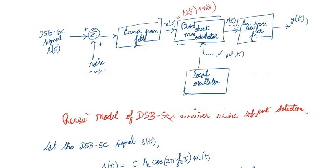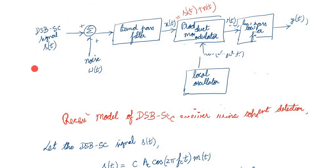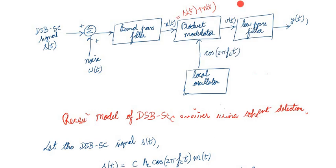In the demodulator we have a modulated input — specifically a double sideband suppressed carrier signal, represented as s(t). It is added with the noise signal, which is white Gaussian noise omega(t). We are going to study the impact of this noise in the receiver. This entire block is called the receiver model. The summed signal passes through a band pass filter, and the output is the modulated signal plus filtered noise n(t).